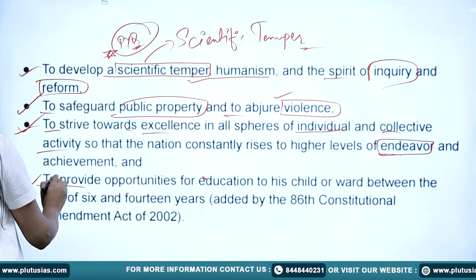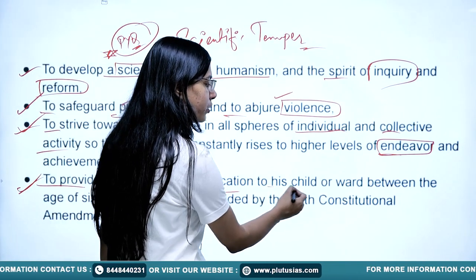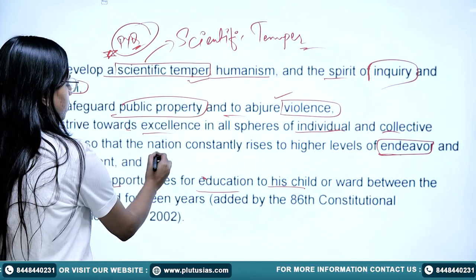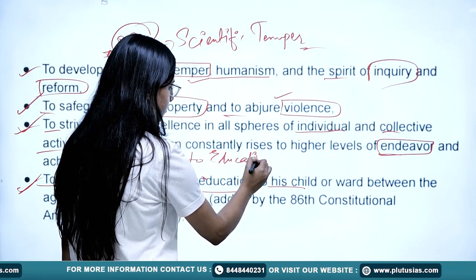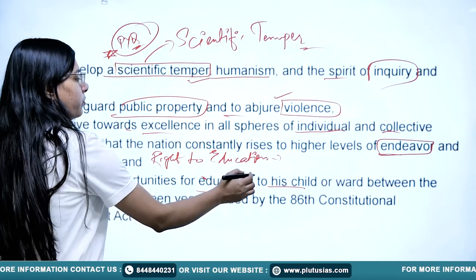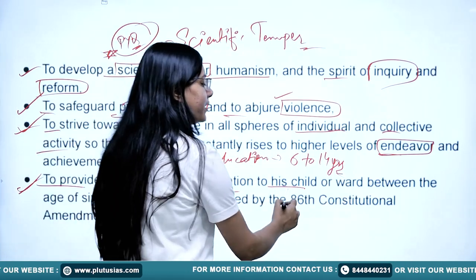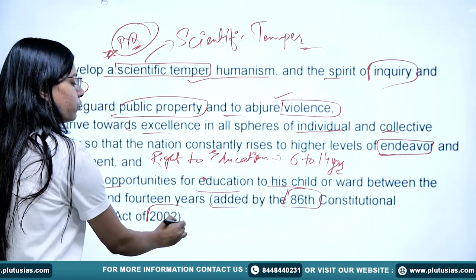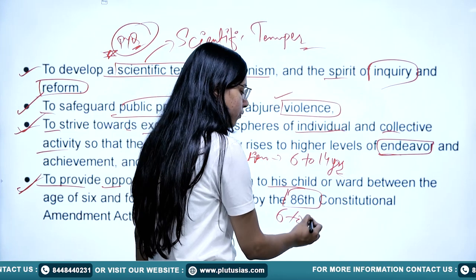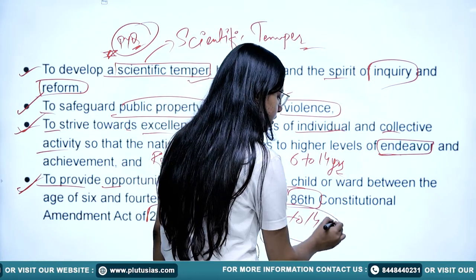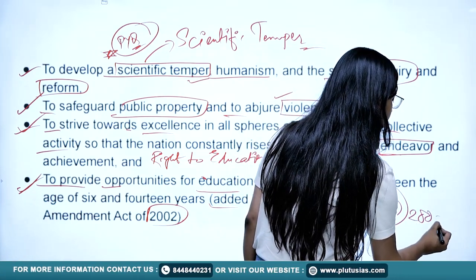The eleventh and last fundamental duty is to provide opportunities for education to one's child and ward — like the right to education — for children from 6 to 14 years of age. This was added by the 86th Constitutional Amendment in 2002.